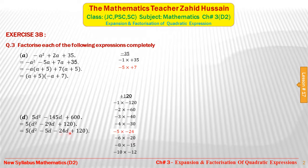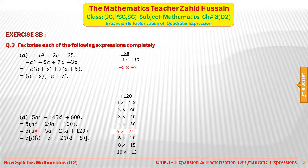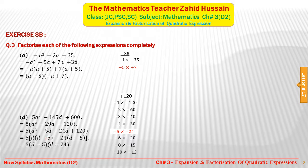We write 5(b² minus 5b minus 24b plus 120). From the first two terms, b is common, leaving (b minus 5). From the last two terms, minus 24 is common, leaving (b minus 5). Now (b minus 5) is common in both groups. Taking it out: 5(b minus 5)(b minus 24). These are the complete factors of the expression.